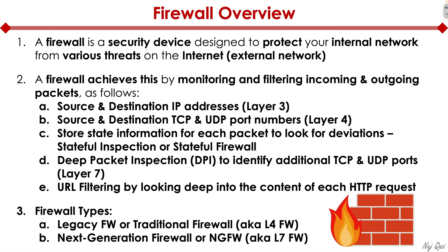What's the difference between a layer four firewall and a layer seven firewall? As the name gives it away, a layer four or traditional firewall can only filter up to layer four — for example, source and destination IP, source and destination port, and storing state information. But the more advanced functions, like deep packet inspection and URL filtering, are the functionality of a next generation firewall.